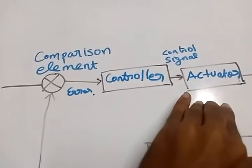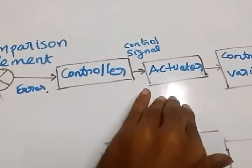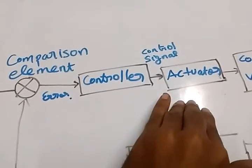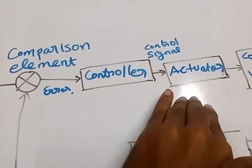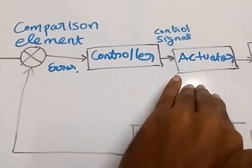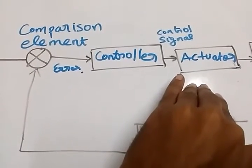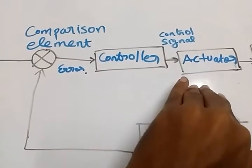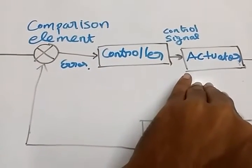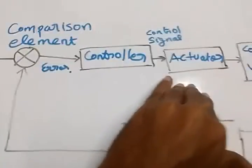Actuator may be a motor, stepper motor, or some driving unit. This actuator is nothing but a driving unit. And there may be many number of actuators in a system.